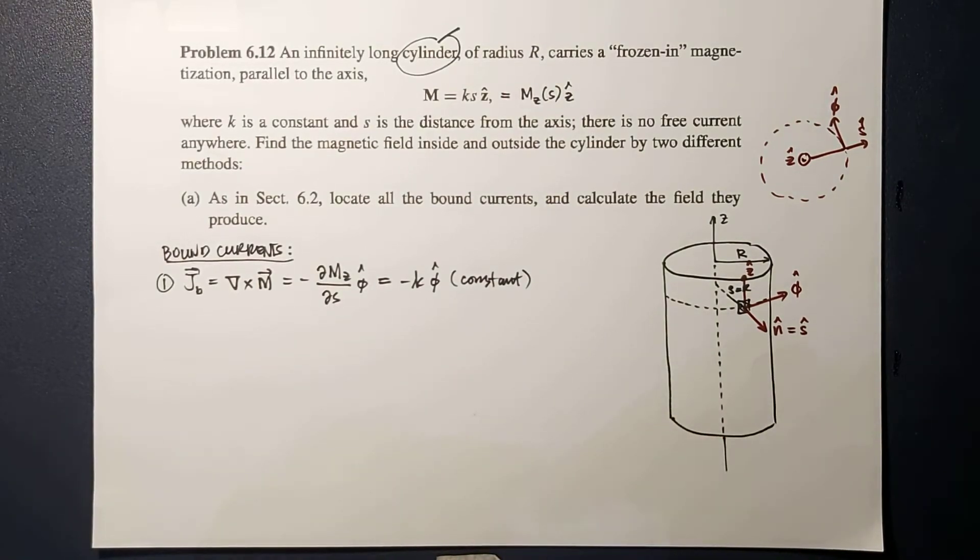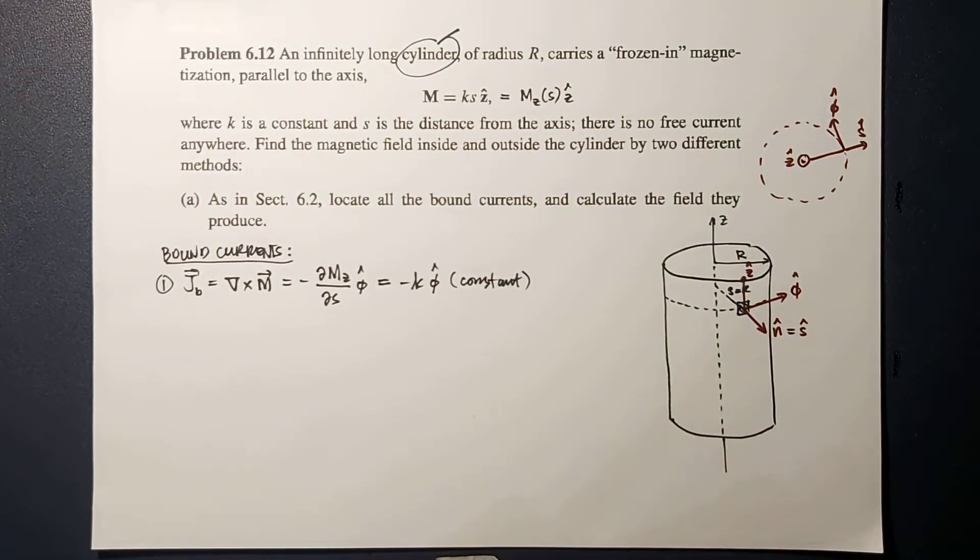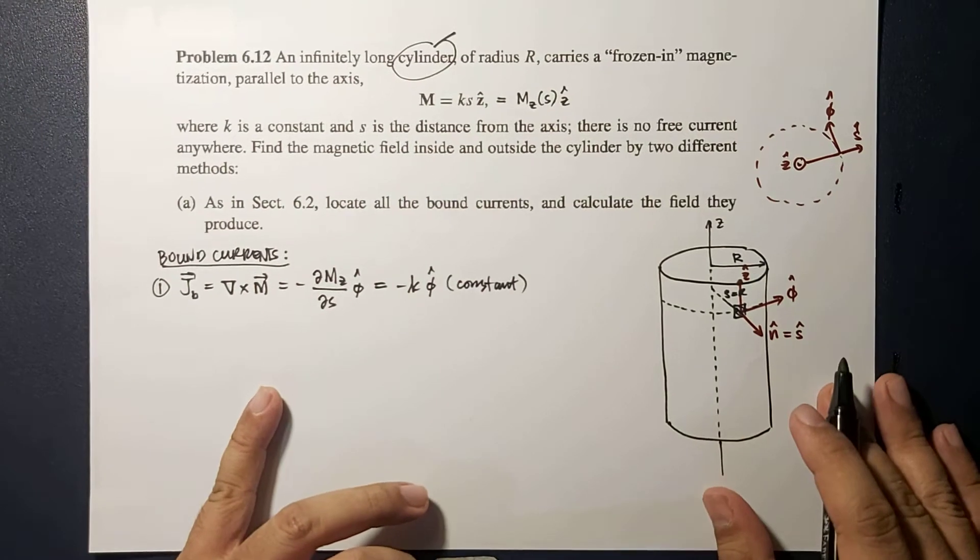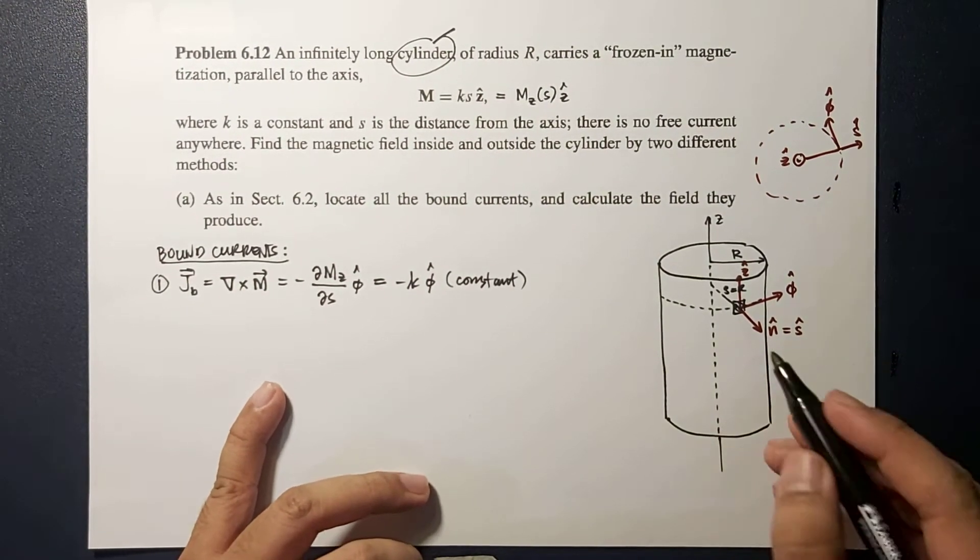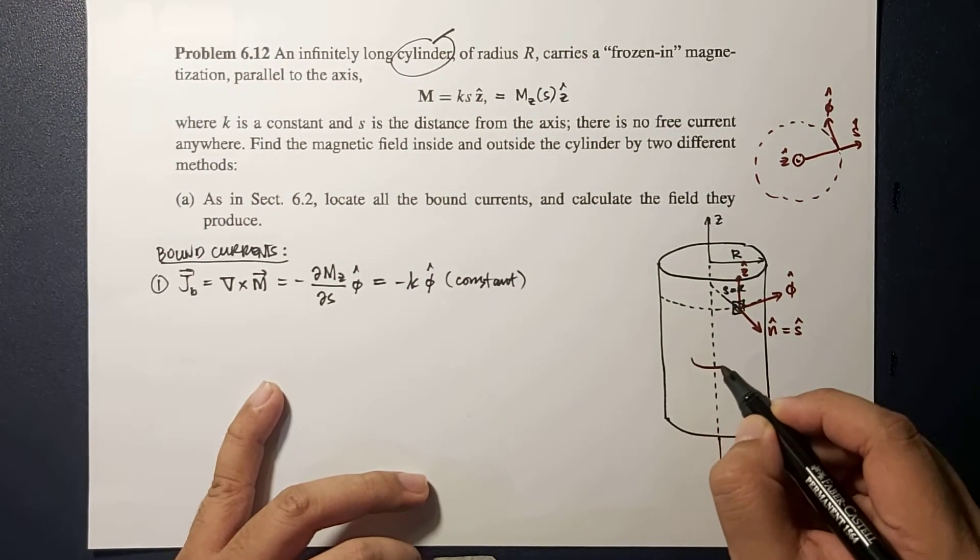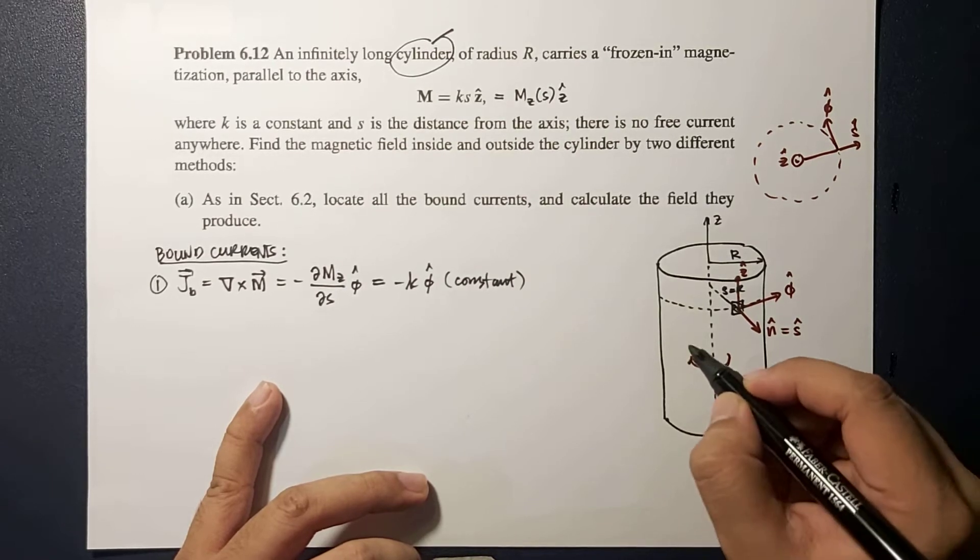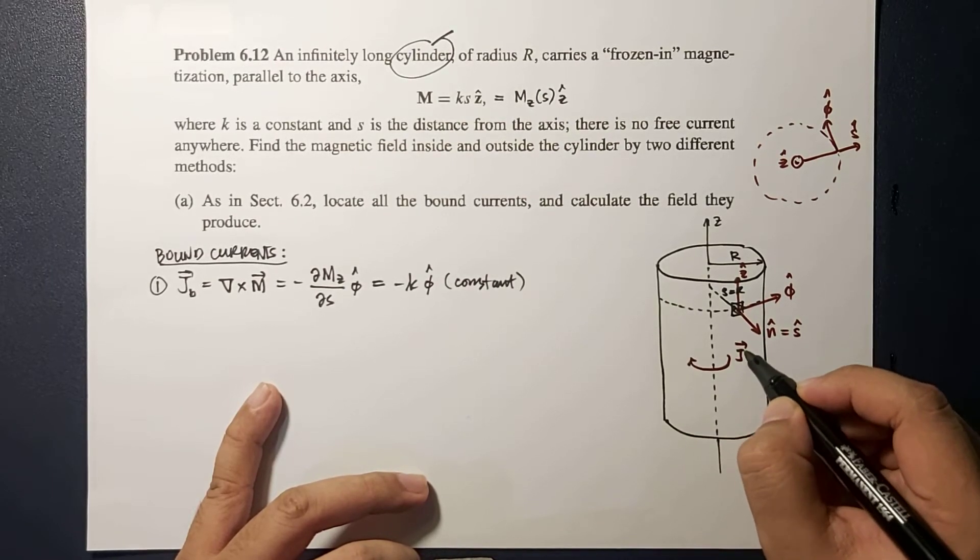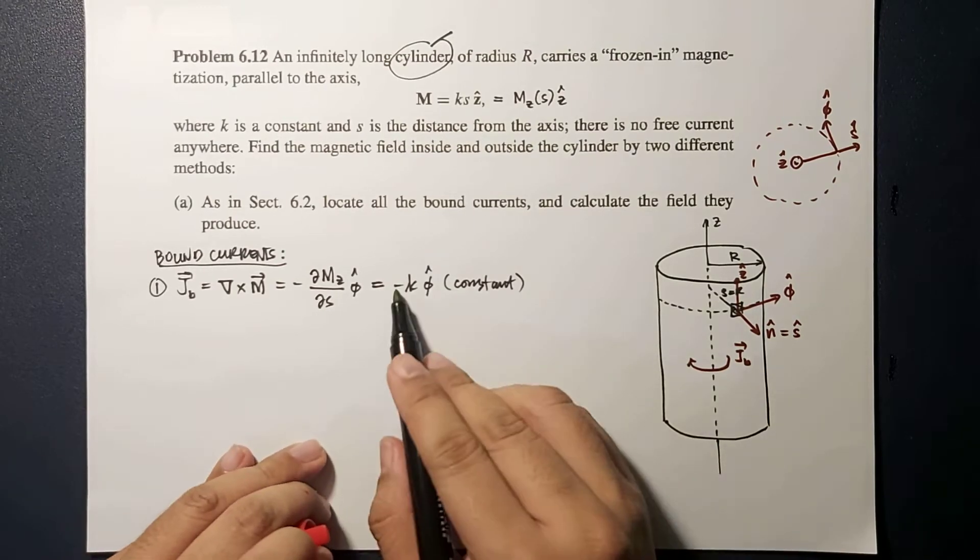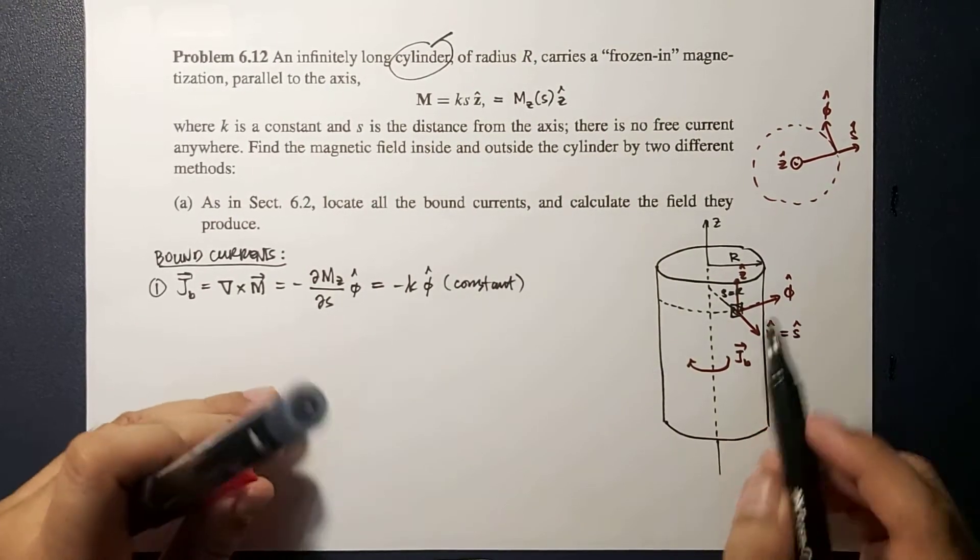So where does this bound current point at? If this is within the volume, this is the direction of the bound current, because this is negative φ hat, and φ hat is in this direction.